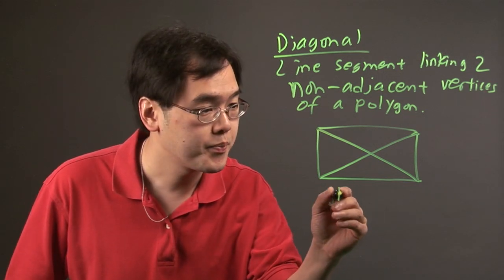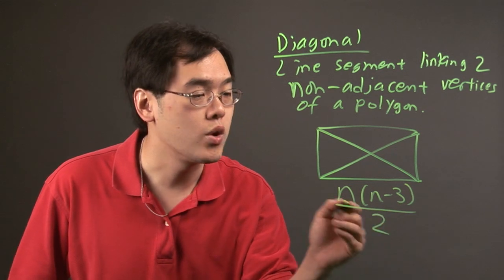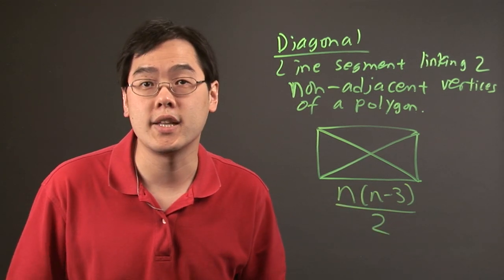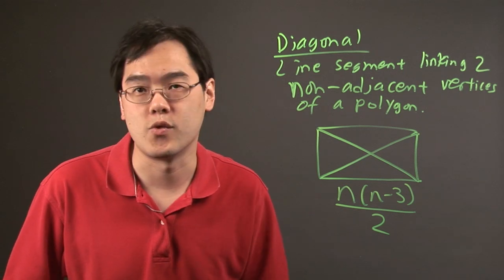Now there is a formula associated with this, and that is n times n minus 3 over 2, where n is the number of sides in a polygon. So to find out how many diagonals can be drawn within a polygon, use this formula.